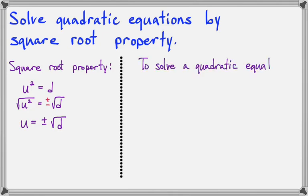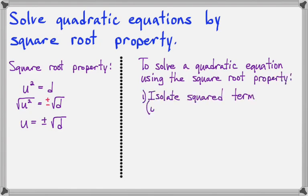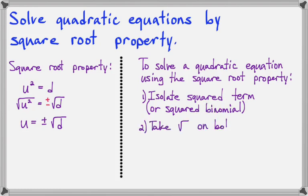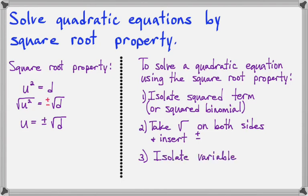To use the square root property to solve an equation, here is our basic strategy. First, you isolate the squared term — it might be a squared binomial, but whatever it is, you isolate the squared thing. Then you take the square root of both sides and don't forget to put in the plus or minus symbol. Then you isolate your variable after that.